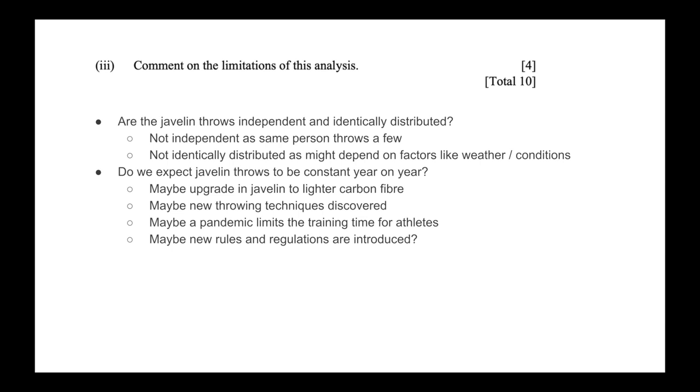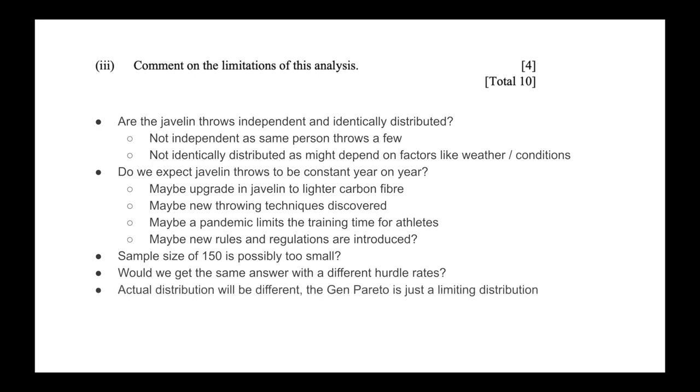This is the thing about being an actuary - we're not just focused merely on the statistics and mathematics. We also want to have a holistic understanding of what we're applying this to, to see if it actually is the perfect fit. Of course, we can step back into our statistics and say maybe that sample size of 150 is probably too small. You can also go statistically - would we get the same answer with a different hurdle rate? Because remember, the actual distribution of these extreme values will be a little bit different. The generalized Pareto is just a limiting distribution.